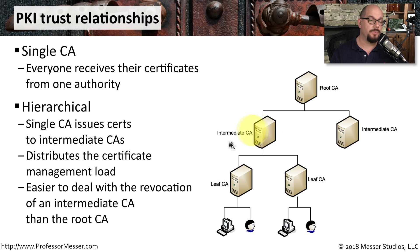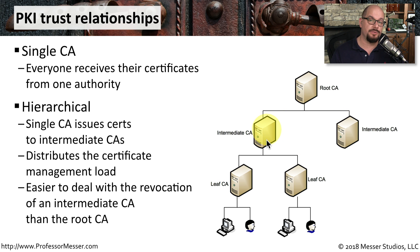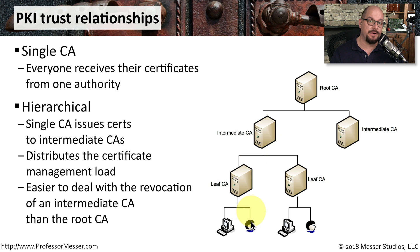Another good reason to use intermediate certificate authorities is to manage the process of revocation. If someone does gain access to the private signing key used on these intermediate certificate authorities, you would only need to revoke the certificates underneath that particular CA, and not revoke all of the certificates for the entire organization.